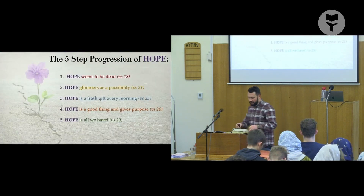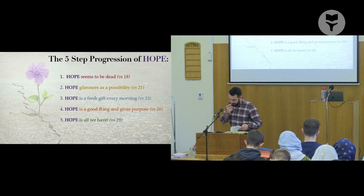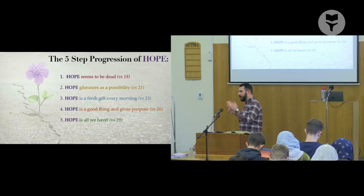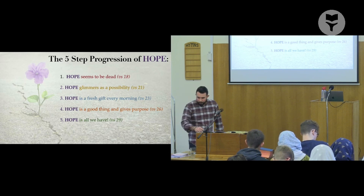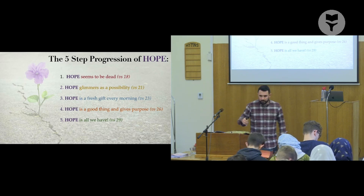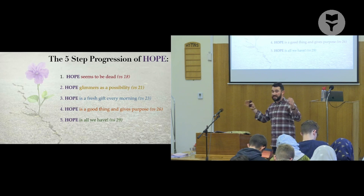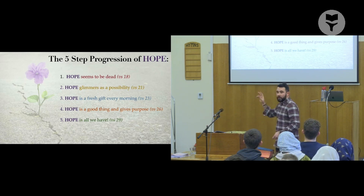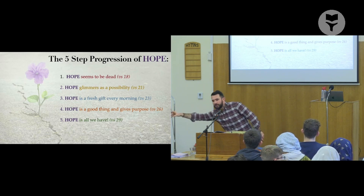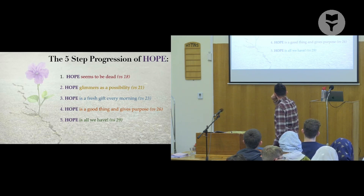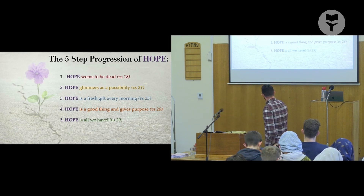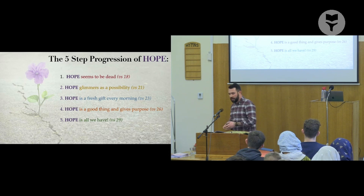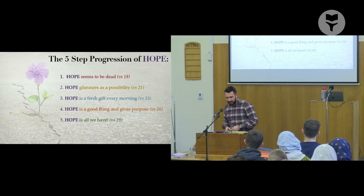Going back to Lamentations chapter 3, we see this absolutely beautiful centre of the book — a five-step progression of hope. In verse 18, as we've seen throughout the book, hope seems dead. Then in verse 21, when he recalls to mind the goodness of God, hope starts to glimmer as a possibility. Then verse 23 builds on this: hope is something we can receive every single day — every new morning is a fresh gift from God. This five-step progression is in your workbook, by the way.